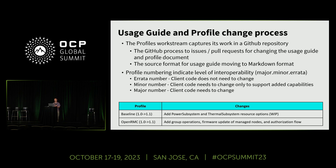Usage guides and profile changes all go through GitHub. If you run a profile and run into a problem, you can file a GitHub issue. We meet on a monthly basis to go through these issues and assign corrections. Changes can end up needing updates to the usage guide or to the profile itself. Because these are interface definitions, we have very strict revision control so that the naming of revisions communicates backward compatibility.